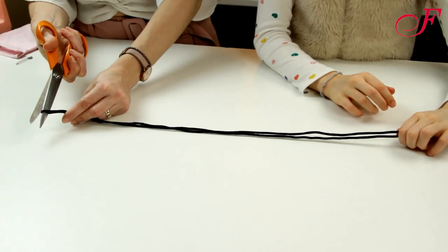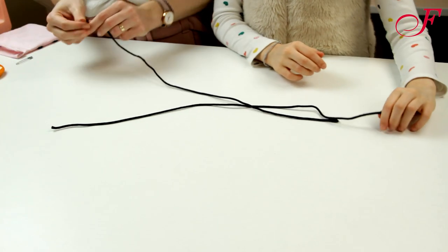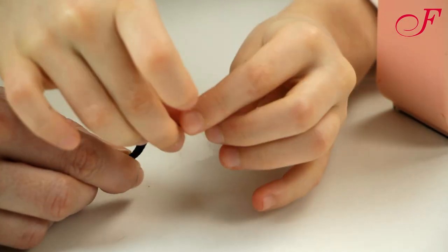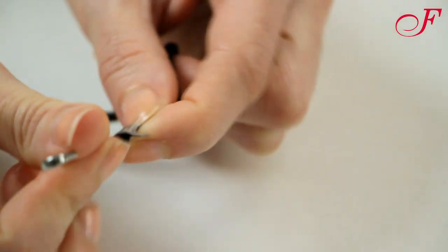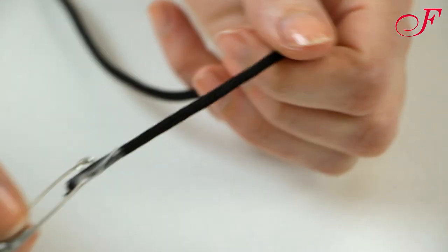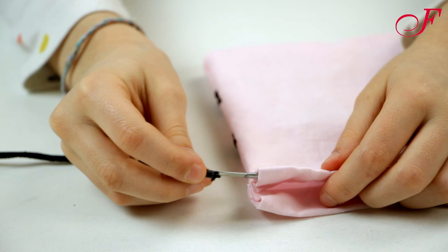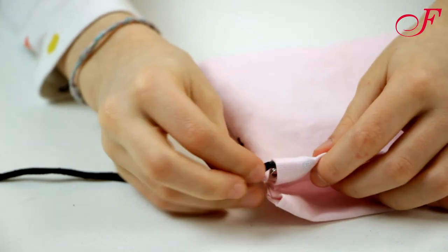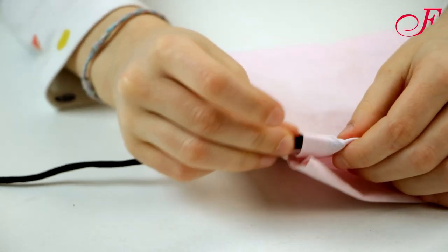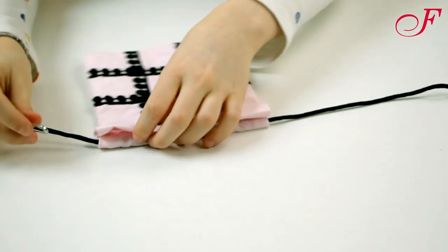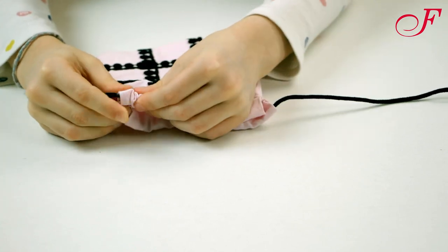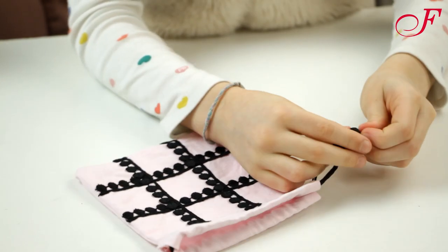Cut the cord in 2. Wrap one end of the cord with adhesive tape. Using a safety pin, pass the cord through a first casing, then the second one. And knot the cord ends.